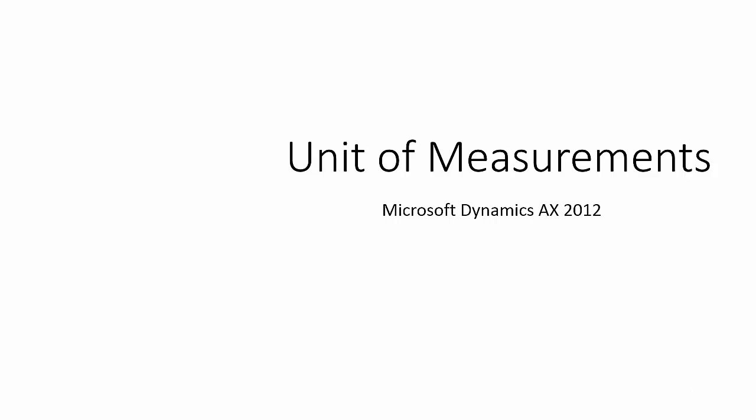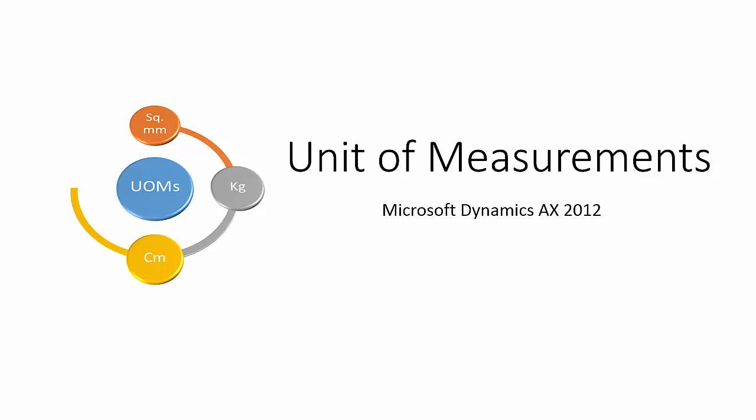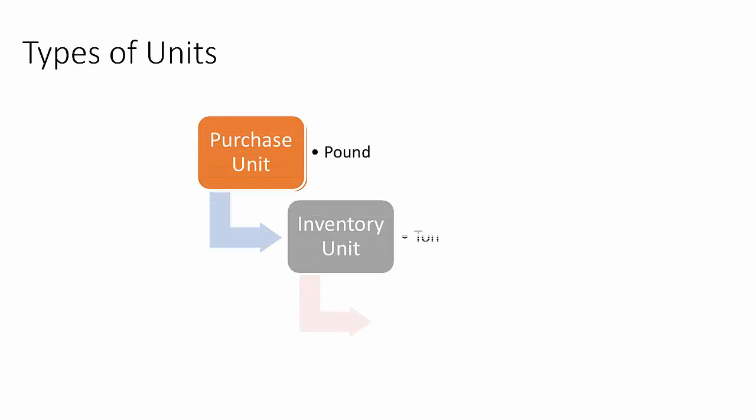In this session we will review the basic functionality of unit of measurements in Microsoft Dynamics AX 2012. A product cannot be sold or purchased unless a unit of measure is associated with it. We must first specify all units of measure that a company uses. A product might be purchased in pounds, stocked in tons, and sold in cages. We may purchase the product in one unit, maintain inventory in another unit, and sell it in another unit.